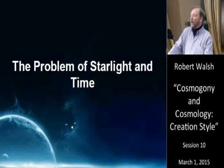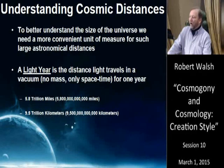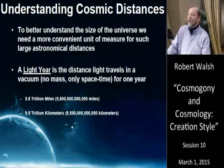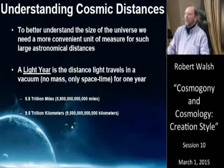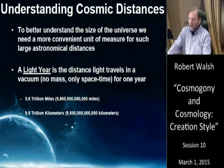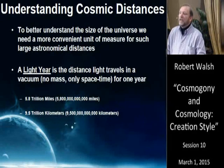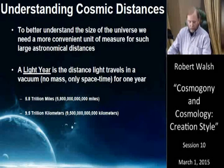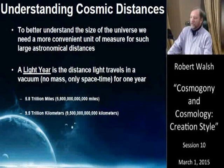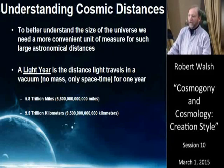Let's take a look at the problem of starlight and time. To better understand the size of the universe, we need a more convenient unit of measure for large astronomical distances. Because the universe is so large and light travels at a specific speed, if the distance of objects is larger than expected, we might have a problem with a universe that's only 6,000 years old. A light year is the distance light travels in a vacuum in one year — 5.8 trillion miles or 9.5 trillion kilometers.